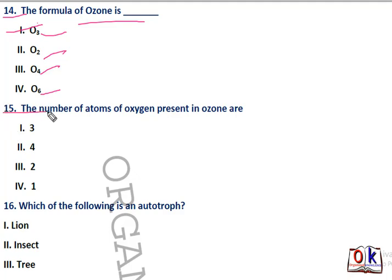Question number 15: the number of atoms of oxygen present in ozone. First will be the right answer — three atoms of oxygen are present in ozone.